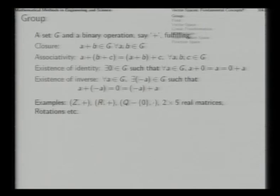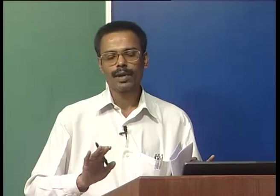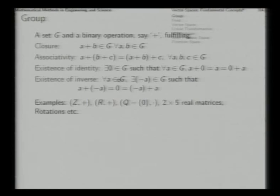Other requirements are associativity of the binary operation, existence of an identity element — that is, there must exist an element in the set which, added to any other element from the left side or the right side, produces the same element back. That identity element we can denote as 0. And finally, the existence of an inverse — that is, for every element a in the set G there must be another element, denoted by minus a, which added to a from either side gives the identity element 0. If these are fulfilled then we have what is called a group.